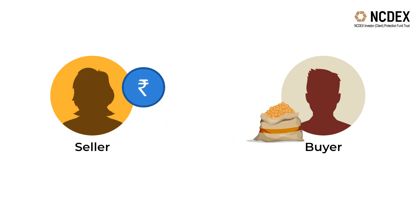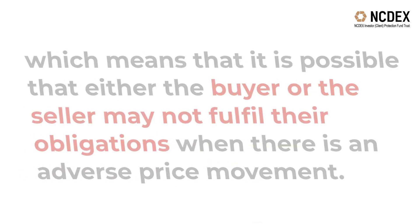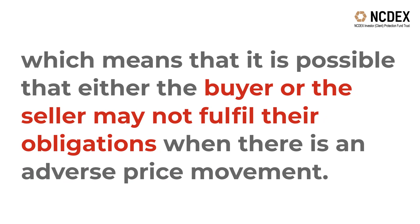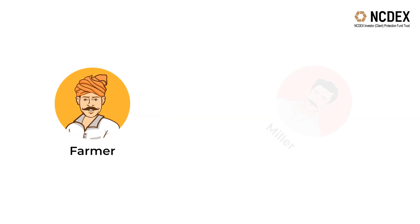A forward contract is a bilateral agreement which can only be settled on expiry, when the seller delivers the underlying asset and the buyer pays the agreed price. Unlike futures, where a clearing house like NCCL becomes the counterparty, forwards involve counterparty risk — meaning it is possible that either the buyer or the seller may not fulfill their obligations when there is an adverse price movement.